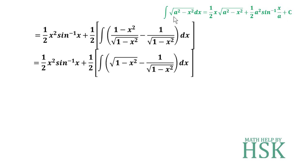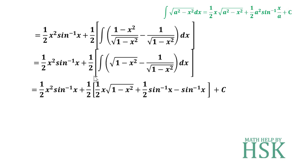Here we take a = 1, since a² = 1² = 1. Applying the formula, the integral of √(1−x²) becomes (1/2)x√(1−x²) + (1/2)·sin⁻¹(x) + C. So we now have all terms integrated and proceed to rearrange to get the final answer.